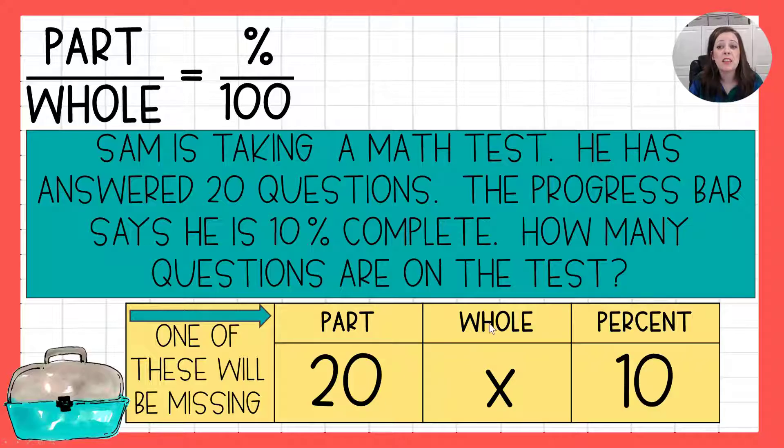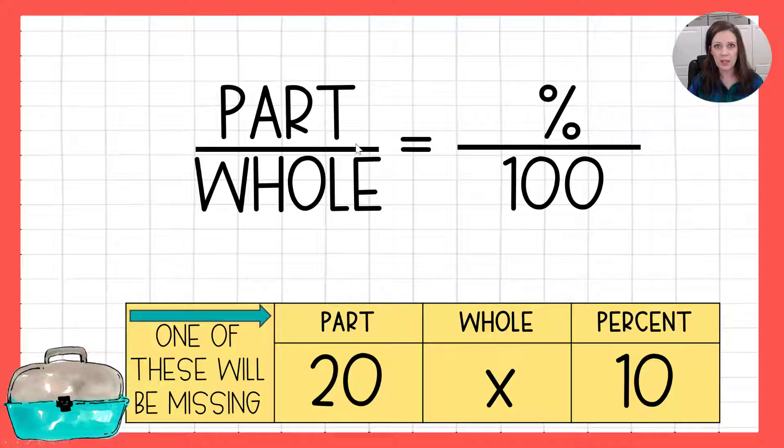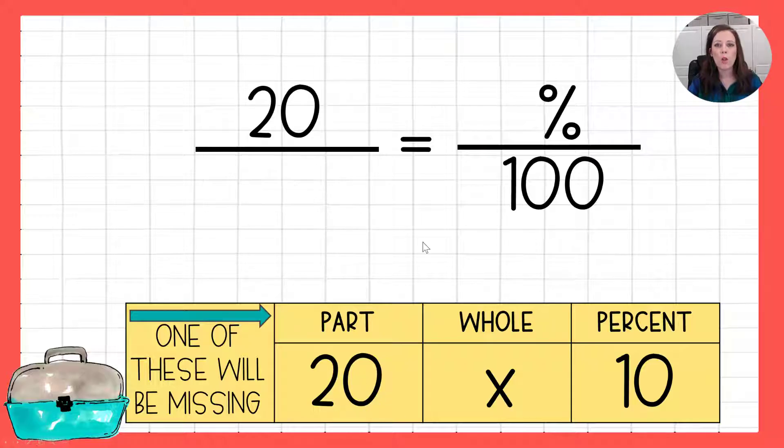Now we're going to take this information and plug it into that proportion that we just talked about that's at the top of this screen. So here it is. Part over whole equals percent over 100. I'm going to replace the part with 20 because that's what we said it was. The whole gets replaced with an x because we don't know. Percent gets replaced with a 10. And then like I said that 100 always the same.